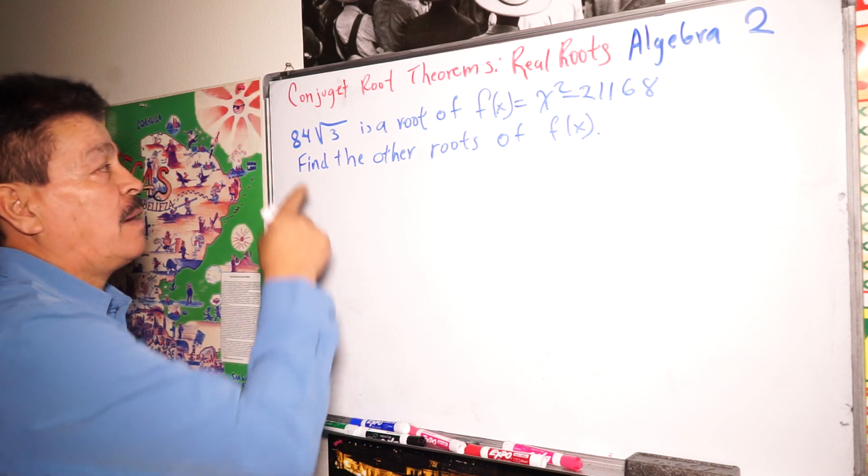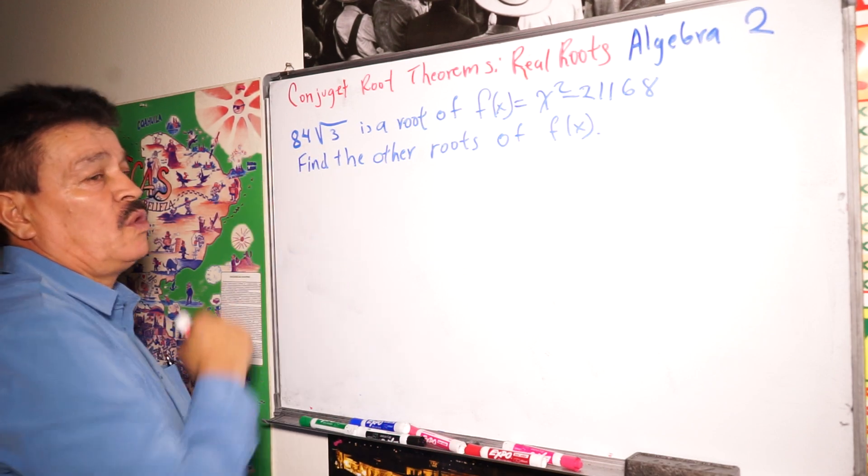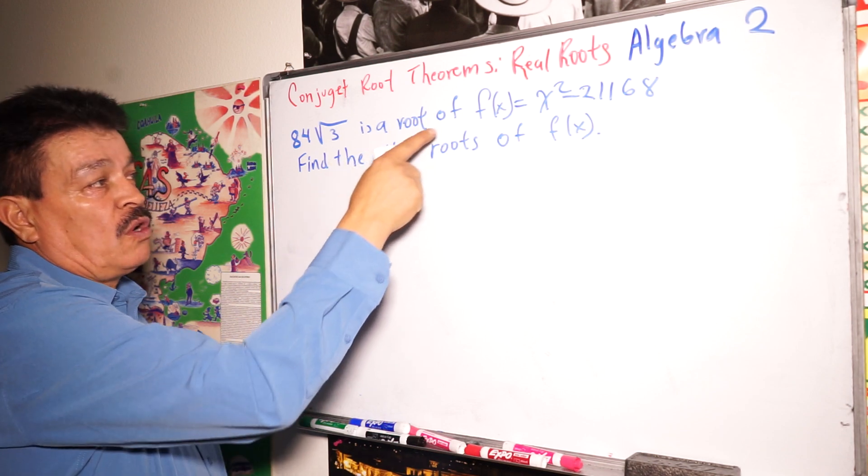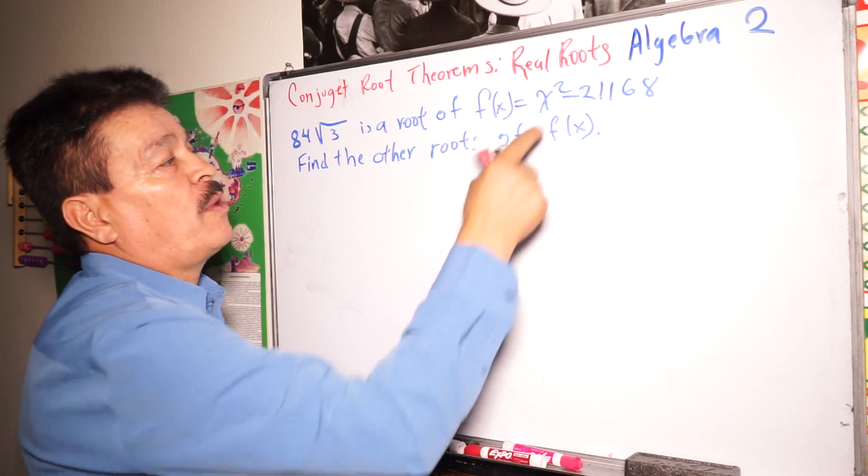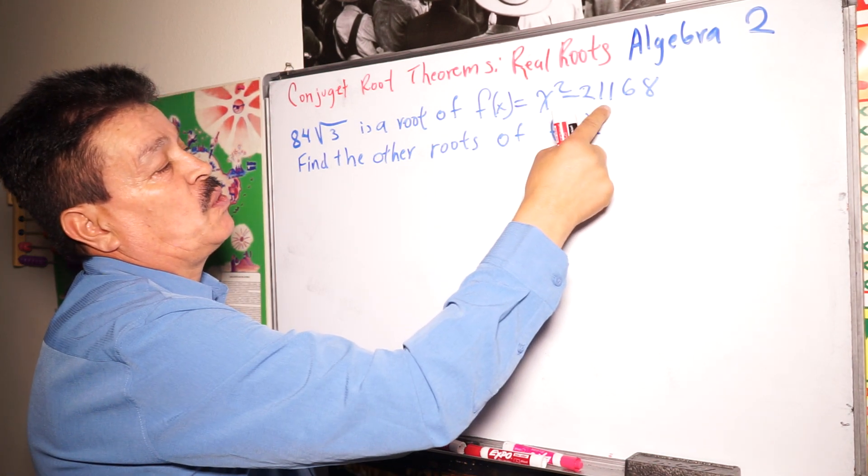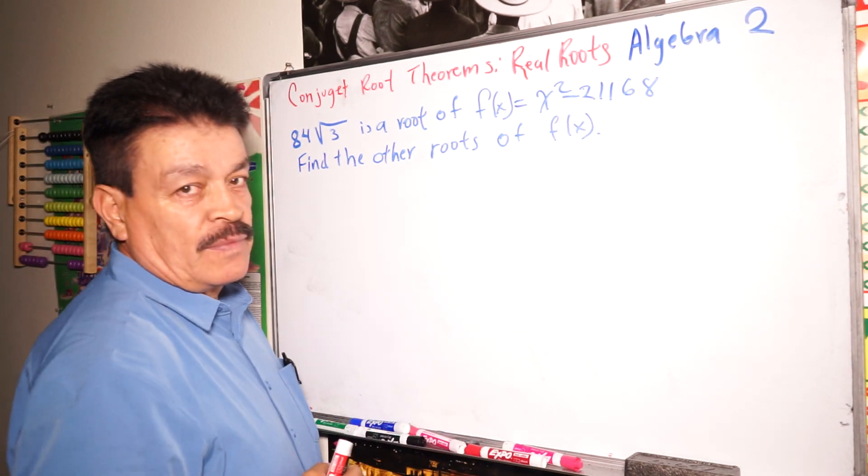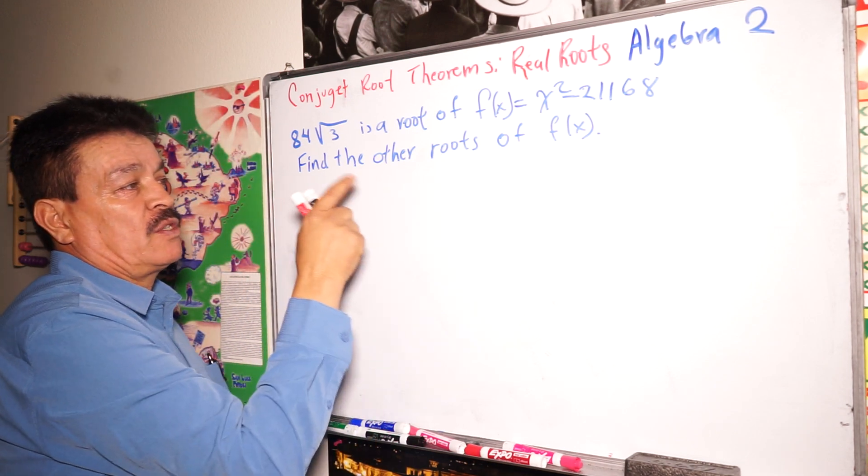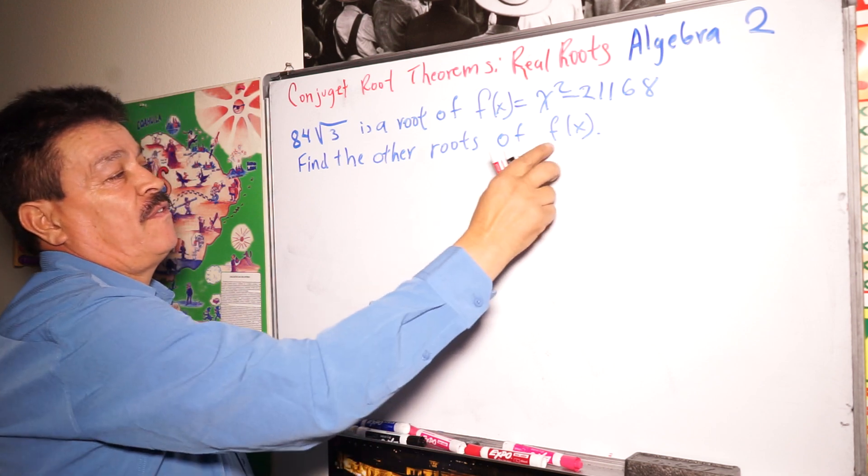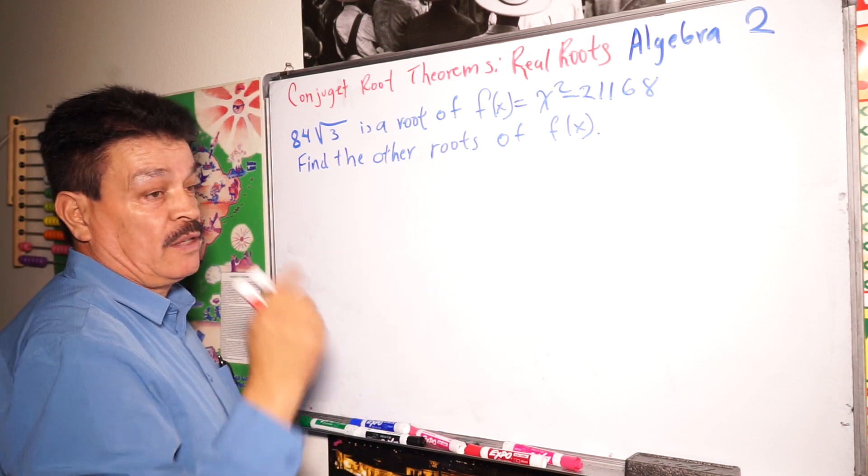84 times square root of 3 is a root of f(x) equals x to the second power minus 2268. So we have to find the other roots of f(x).